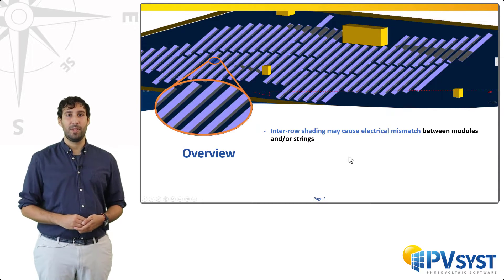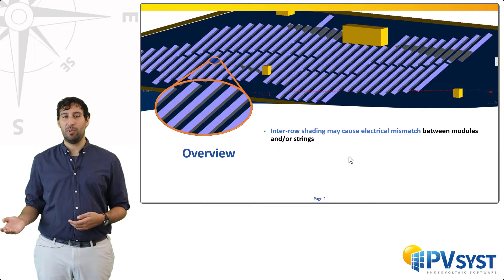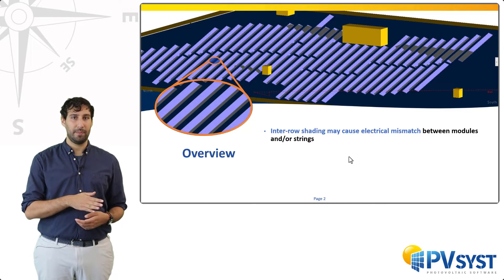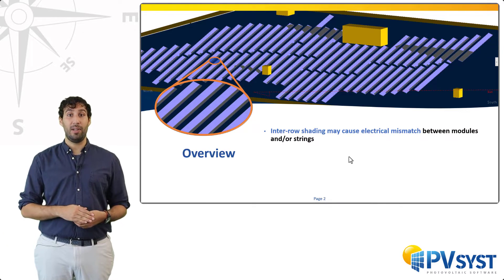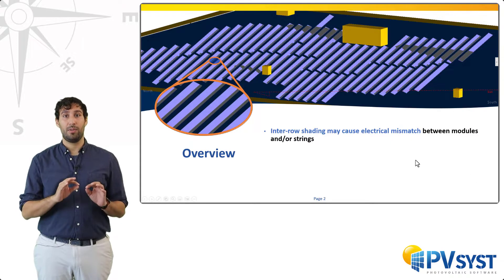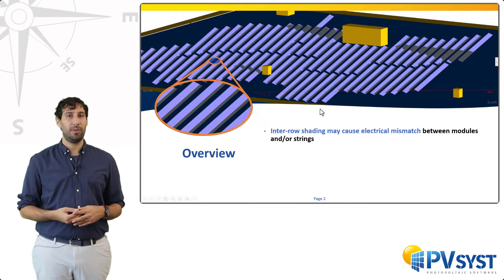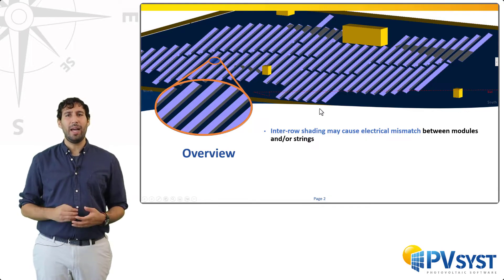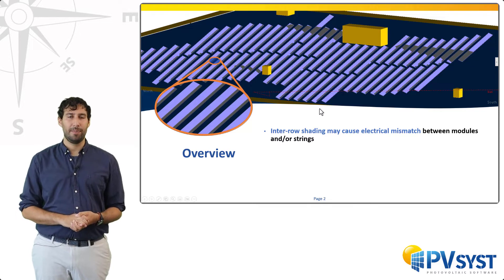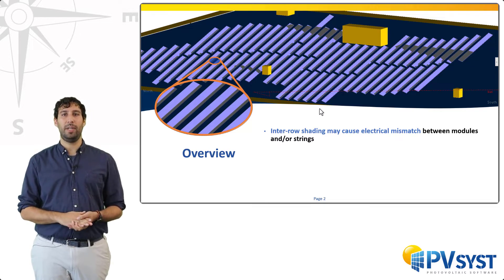As you may know well, shadings will cause electrical mismatch between sub-modules, modules, and strings. The amount largely depends on the layout and connections of your system, but overall you should always expect some extra loss from this electrical mismatch. I will highlight the most prominent cases, always in the context of regular inter-row shadings.